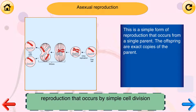Asexual reproduction. Reproduction that occurs by simple cell division. This is a simple form of reproduction that occurs from a single parent. The offspring are exact copies of the parent.